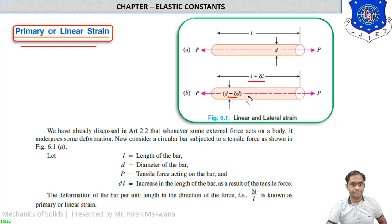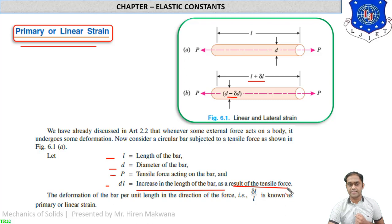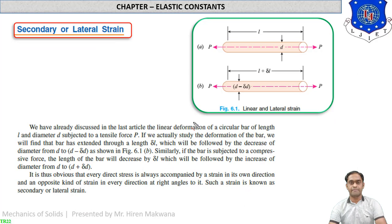Let l equal length of the bar, d equal diameter, P equal tensile force, and delta-l equal increase in length as a result of the tensile force. The deformation of the bar per unit length in the direction of the force — delta-l by l — is known as primary or linear strain. The change in diameter is the basis for secondary or lateral strain.